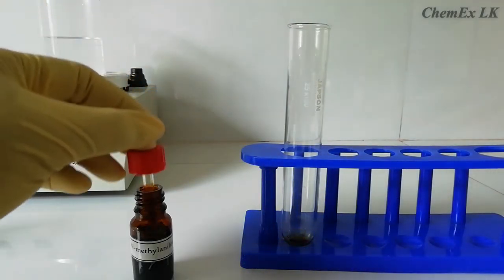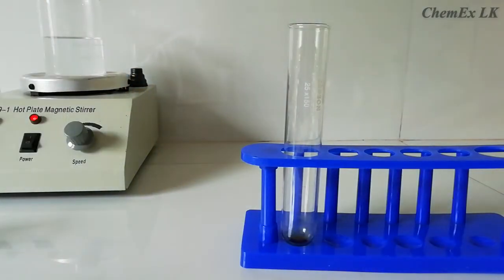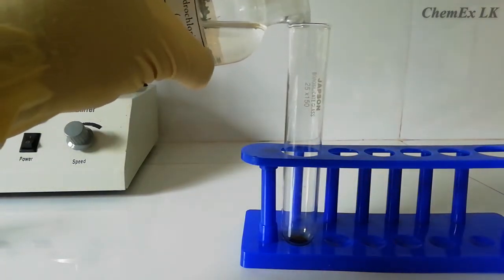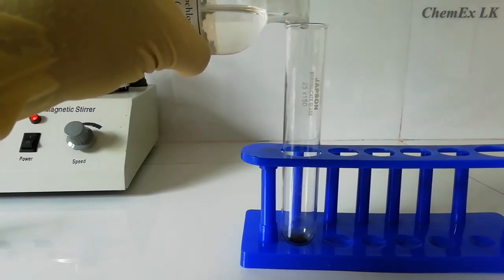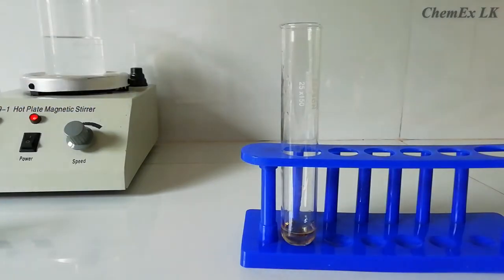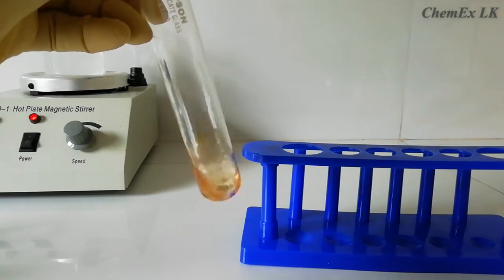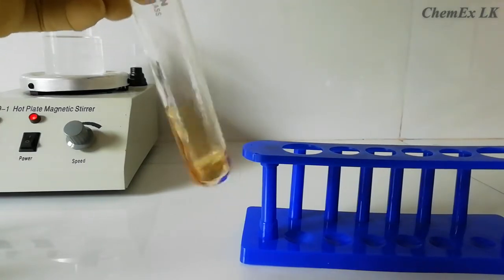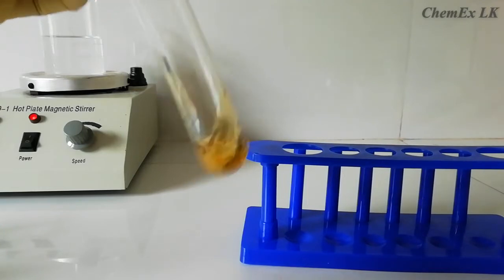Alright, that is enough. Now we need to add about 5 milliliters of dilute hydrochloric acid. No need to measure. When we add hydrochloric acid, the N-methyl aniline dissolves in the hydrochloric acid.